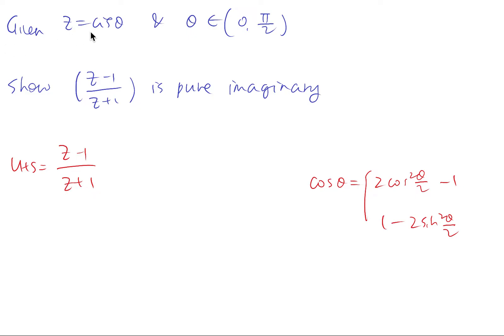So they told you z equals cis θ, and then θ is in the first quadrant, and now we're trying to show something is purely imaginary. To show something is purely imaginary, you're trying to express this in terms of a plus bi, and all you need to show is just the real part equals zero, therefore it would be purely imaginary. So let's start to simplify this question.